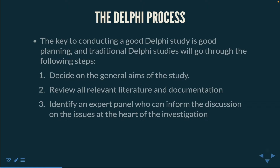The key to conducting a good Delphi study is good planning. Traditional Delphi studies will go through the following steps. Step 1: Decide on the general aims of the study. As is usual with any research method, you begin with a statement of the problem, then turn this into specific aims, which you organize into a set of sequential tasks and issues to be tackled. As the Delphi method is already so well defined, the research design is set a priori.